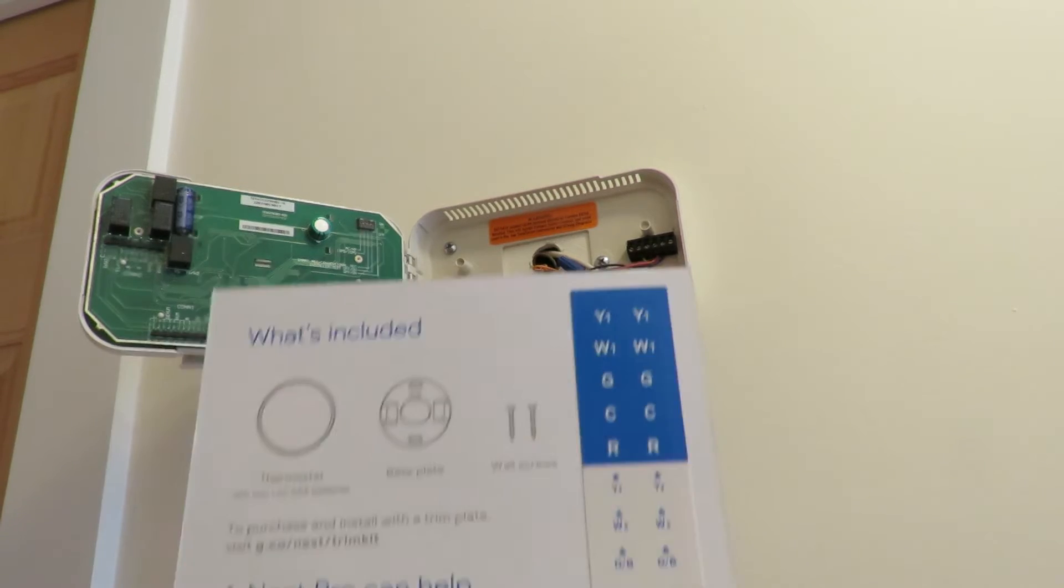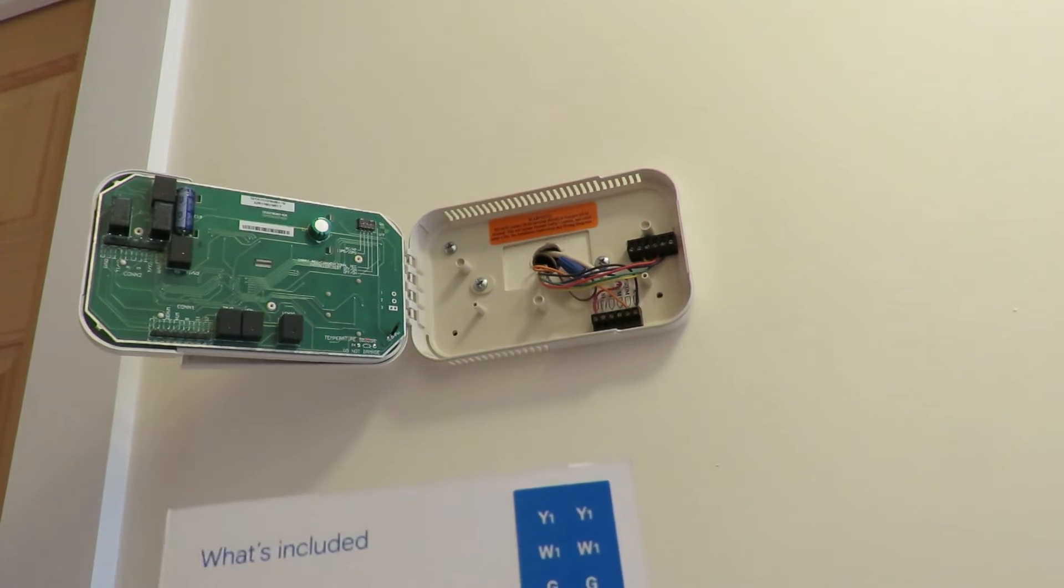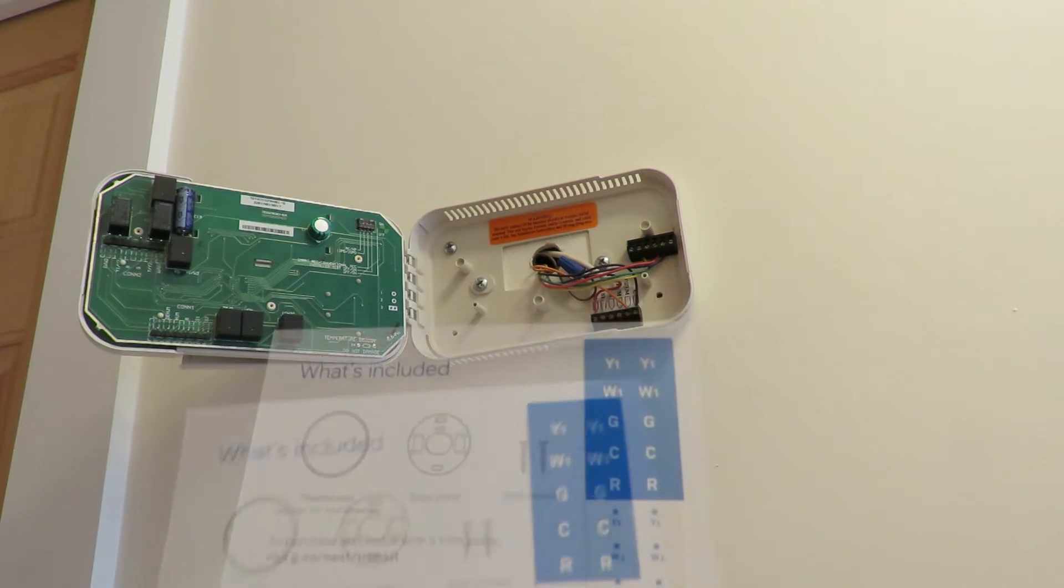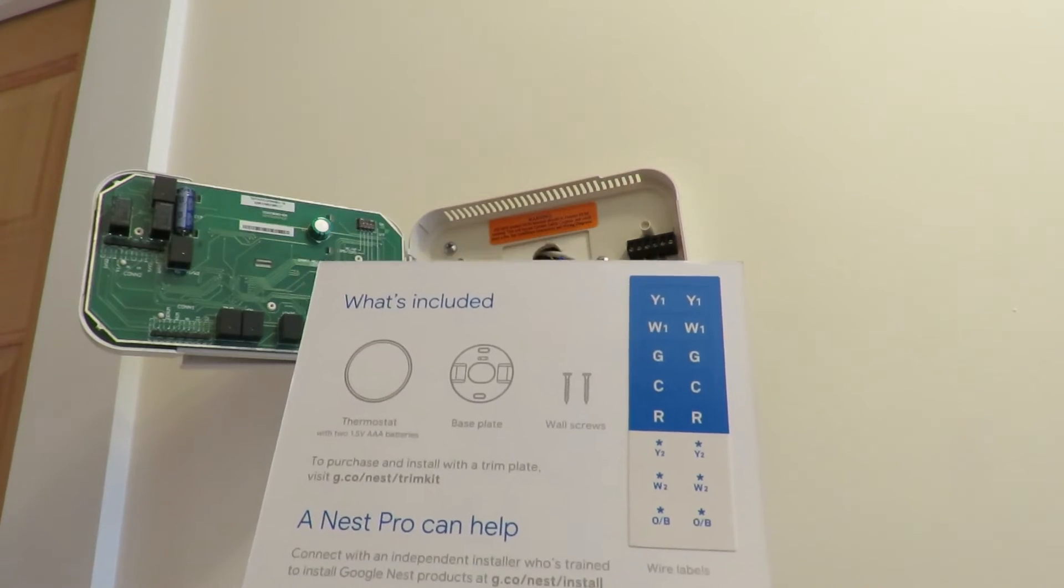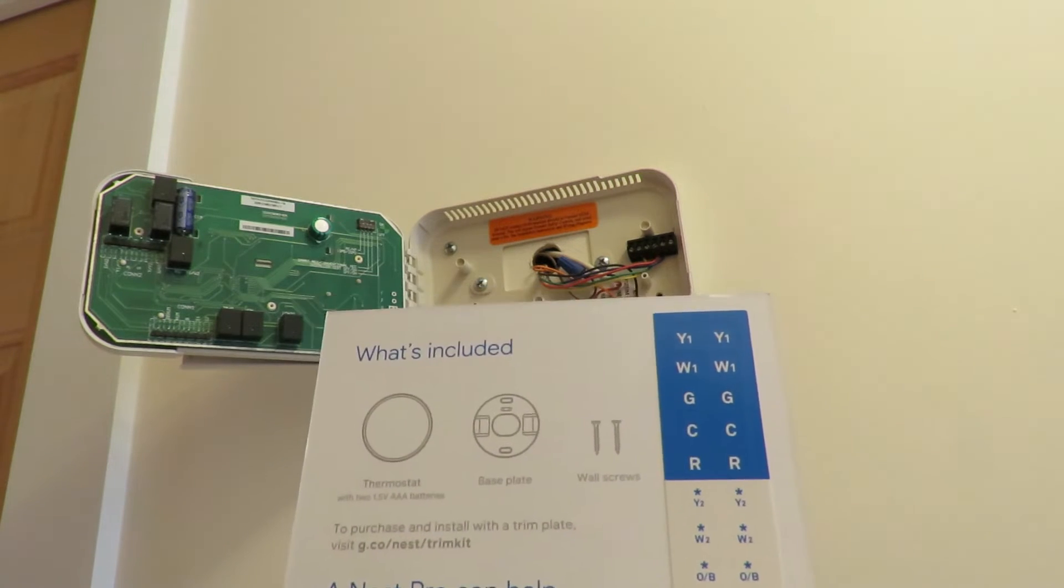The other thing that's really important is that the Nest comes with these labels, so you can actually figure out which label to put onto which wire on your thermostat. That'll help with your connections.